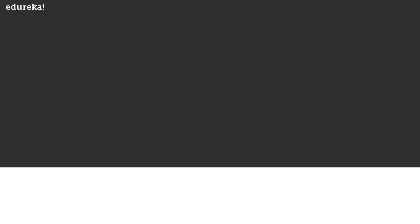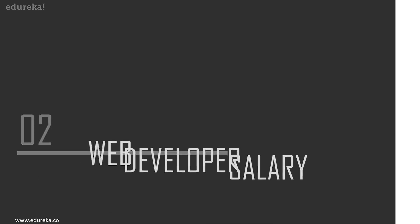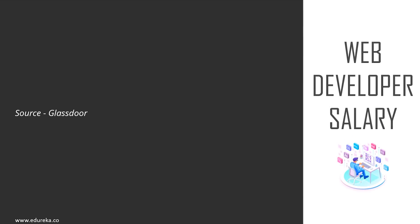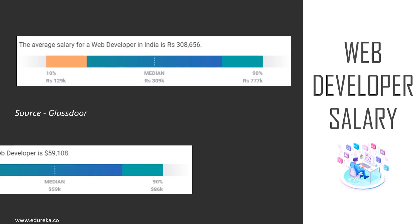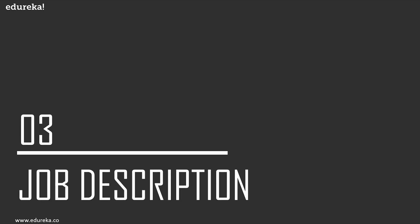Talking about the average salary of a web developer in India, a web developer earns around three lakh eight thousand per annum. In the US, the average salary ranges around fifty-nine thousand dollars per annum. Glassdoor rates the average base pay for web developers at ninety-three thousand dollars per year, which is higher than PayScale and Salary.com, which claim a median of sixty thousand dollars.